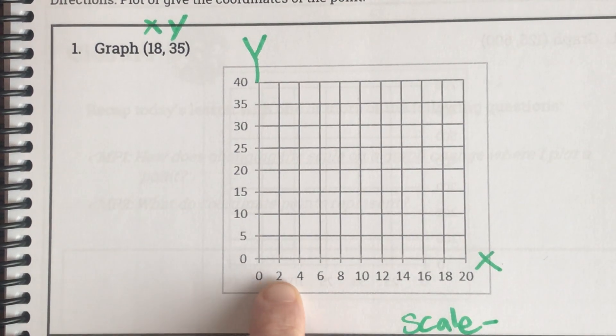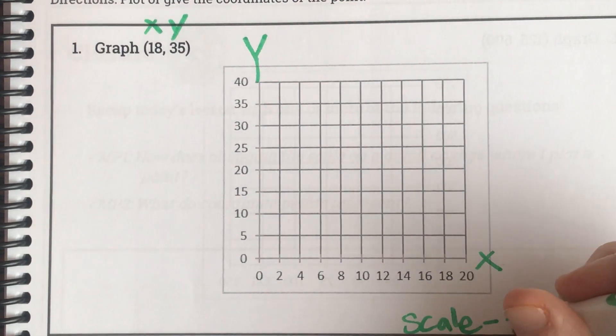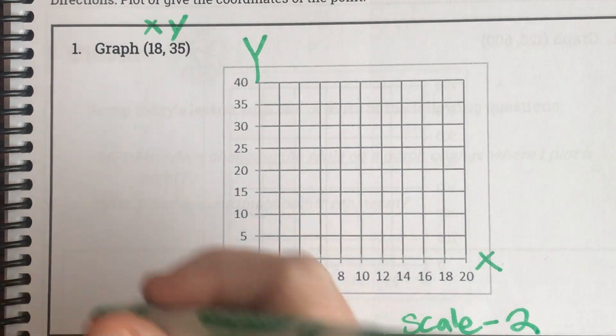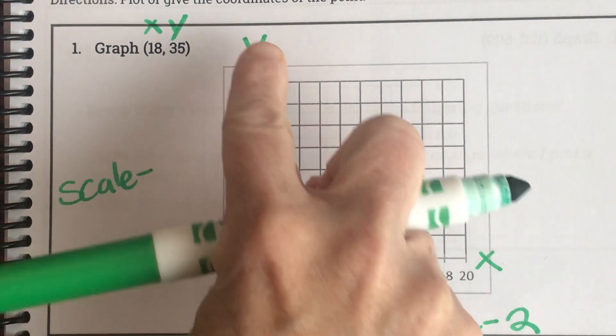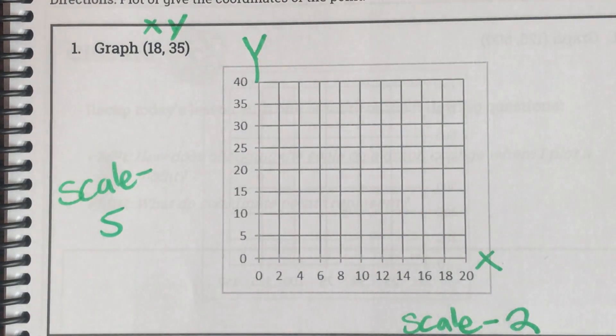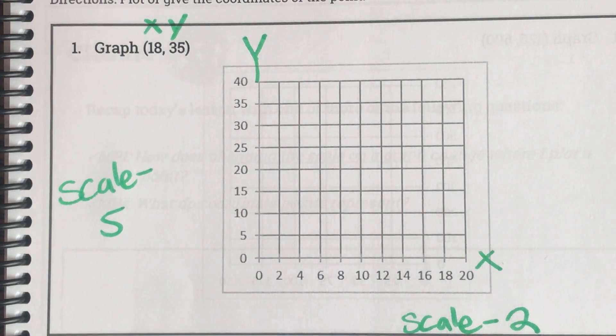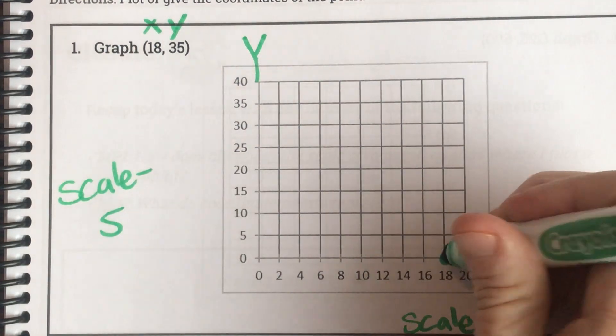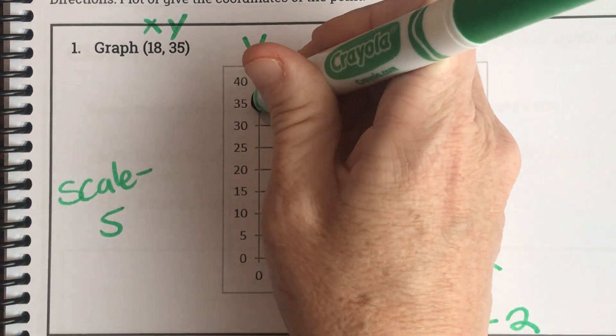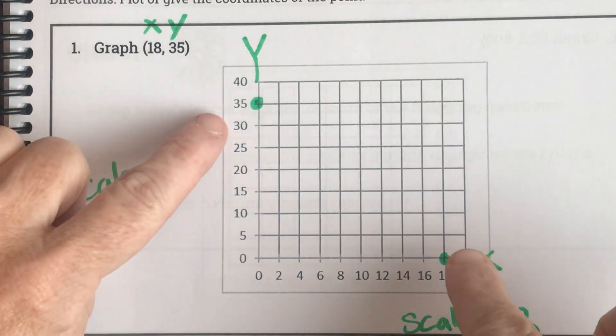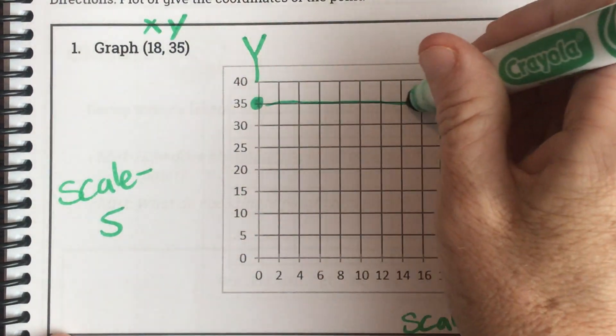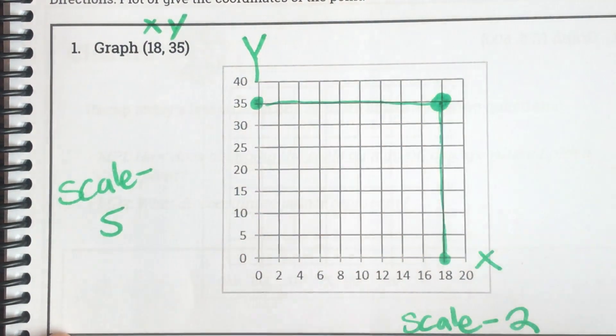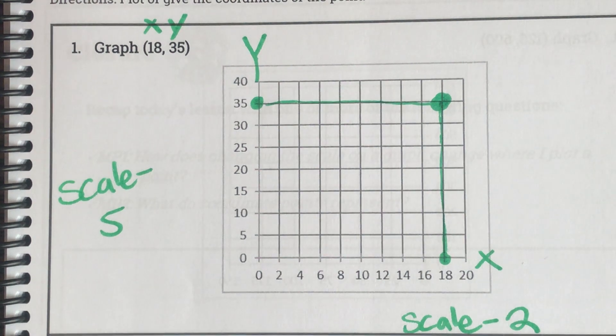They don't ask us for this, but we're just going to write it just to be the best we can be. So what is my scale for my x? If I look closely, my scale looks like multiples of two. They're counting by twos. And what is my scale of my y-axis? They're counting by fives. But now they want us to graph this. So my x is 18 and my y is 35. And we're going to find where they meet. You can trace or you could use your fingers, but that is our spot right there.